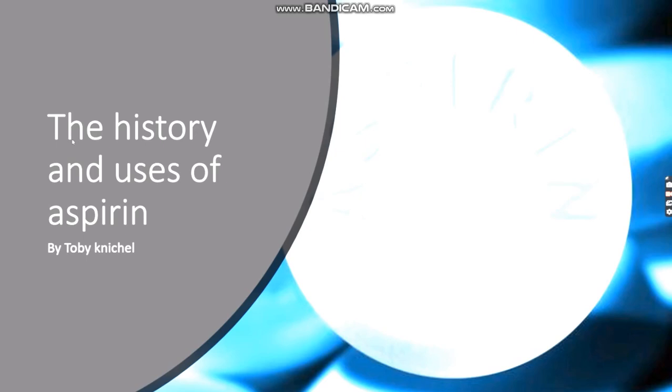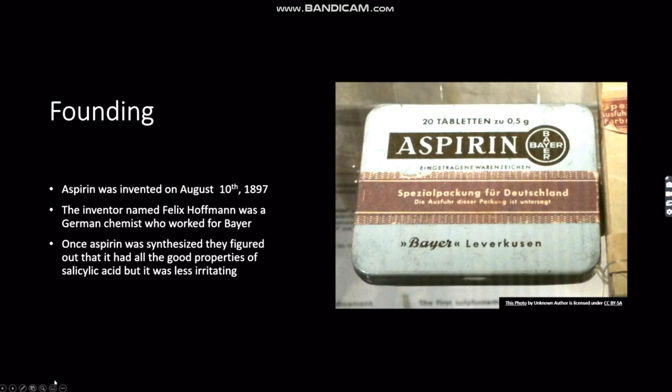The History and Uses of Aspirin by Toby Knischel. Aspirin was invented on August 10, 1897. The inventor, Felix Hoffman, was a German chemist who worked for Bayer, a company that is still active today and makes a lot of medicine.